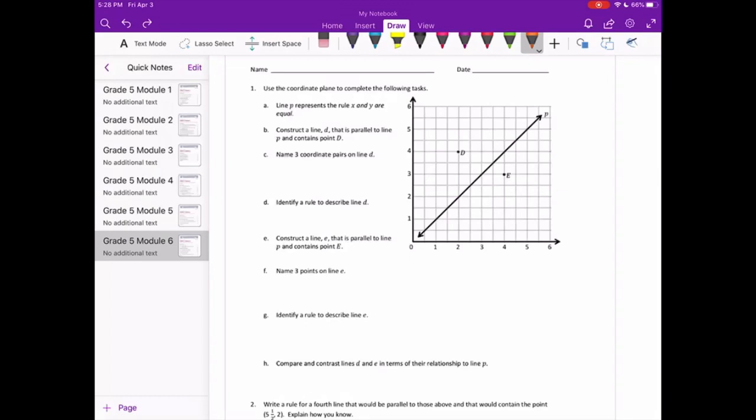Line P represents the rule X and Y are equal. Construct a line D that is parallel to line P and contains point D. So we're going to make a line that is parallel to line P.